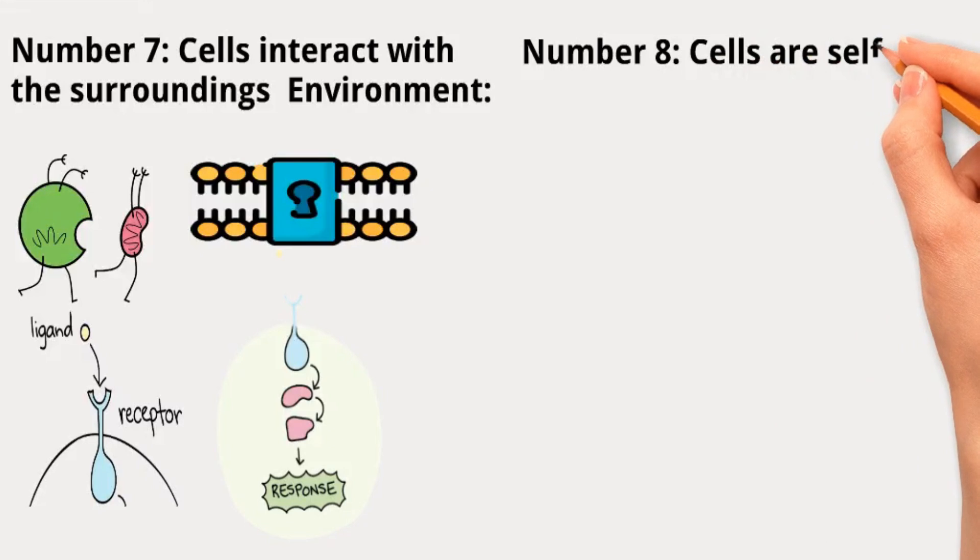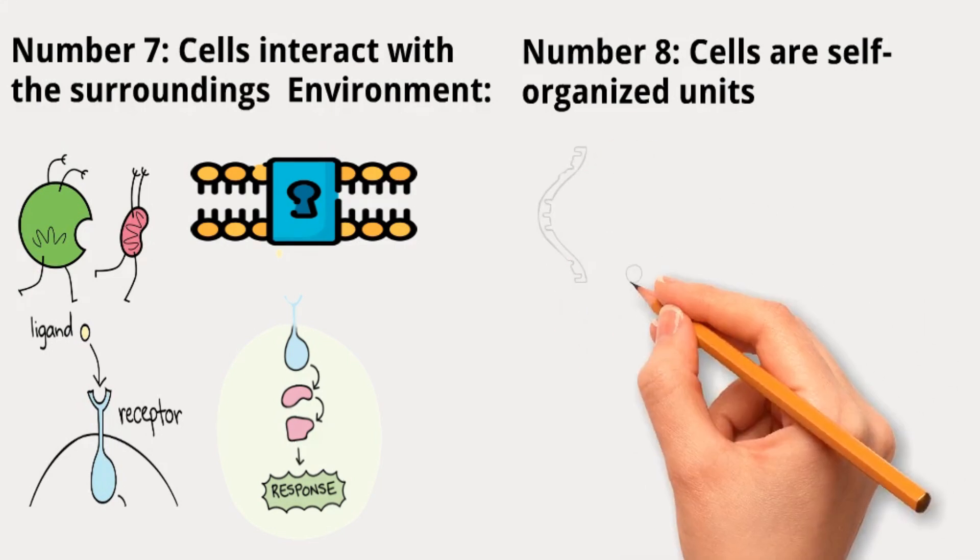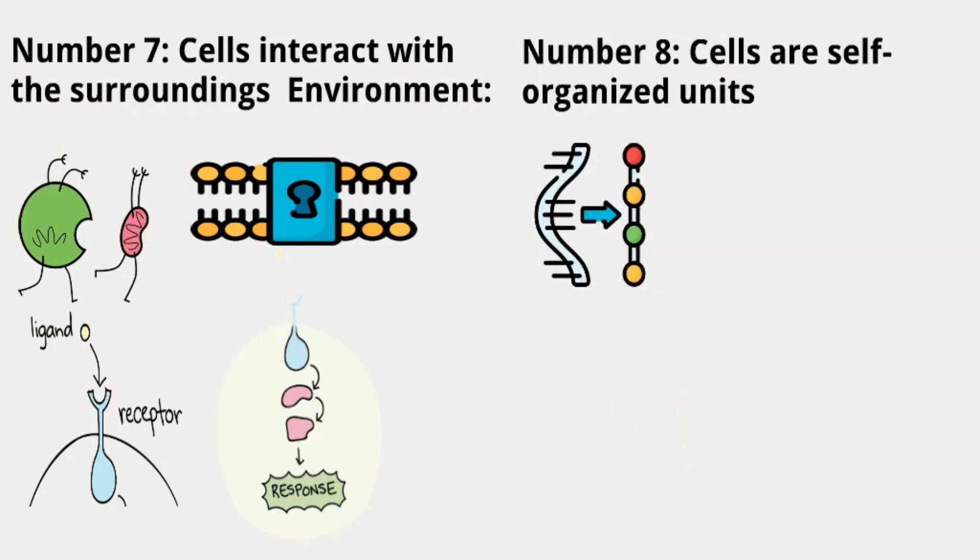Number 8: Cells are self-organized units. Think of cells like assembly lines in a car factory. Nucleic acids, genetic material, contain the design, and proteins are the workers. What's unique about cells is that these workers don't need someone telling them what to do. They automatically do their job one step at a time, like a complex machine.